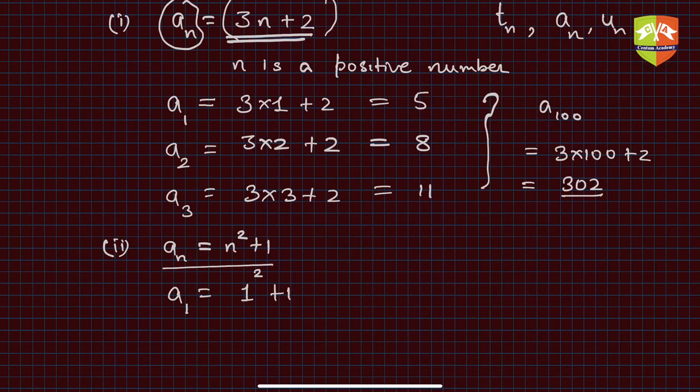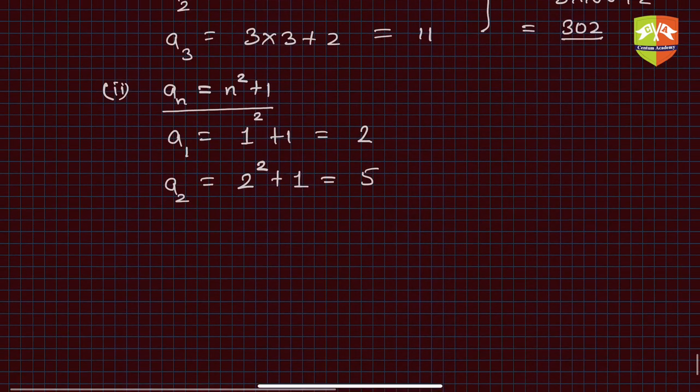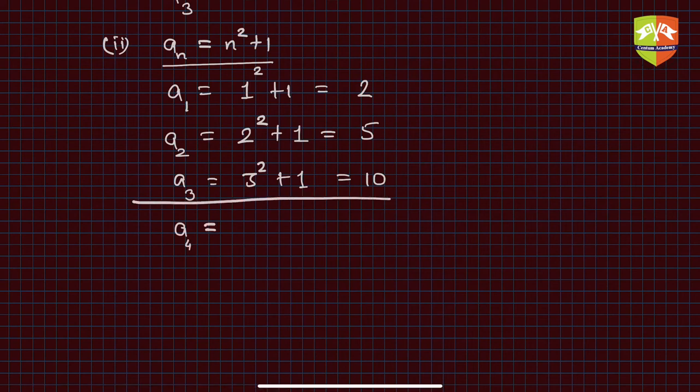a_3 is 3² + 1 = 10, and a_4—we are just extending though only this much was required, but for our analysis we'll go a bit ahead—is 16 + 1 = 17, and a_5 is 5² + 1 = 26. We had taken this sequence in previous sessions. Now let us find the difference of two consecutive terms.